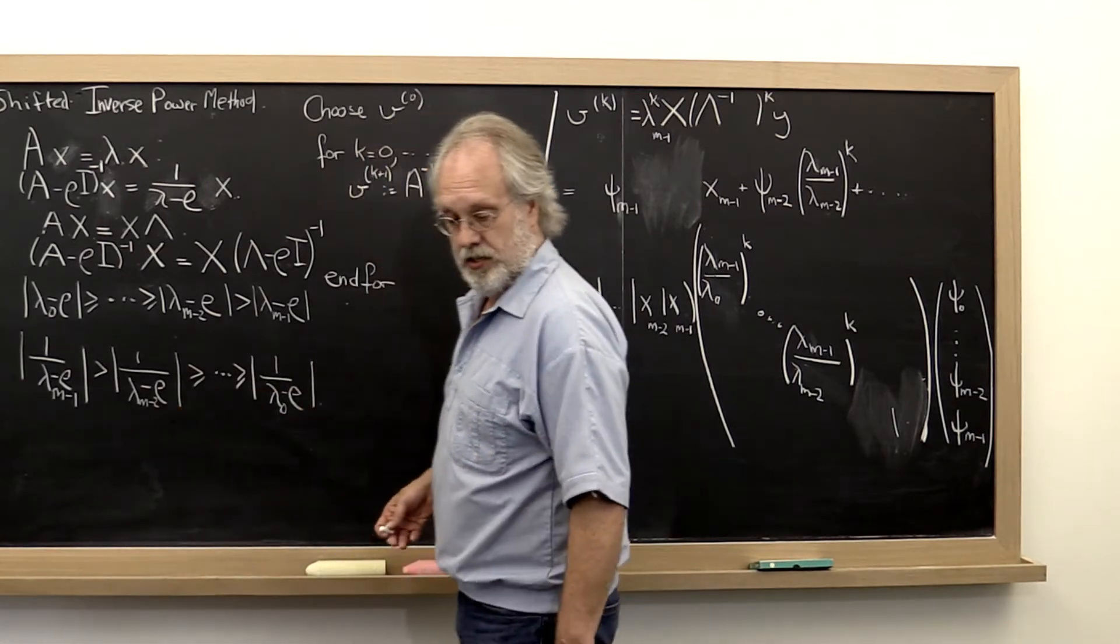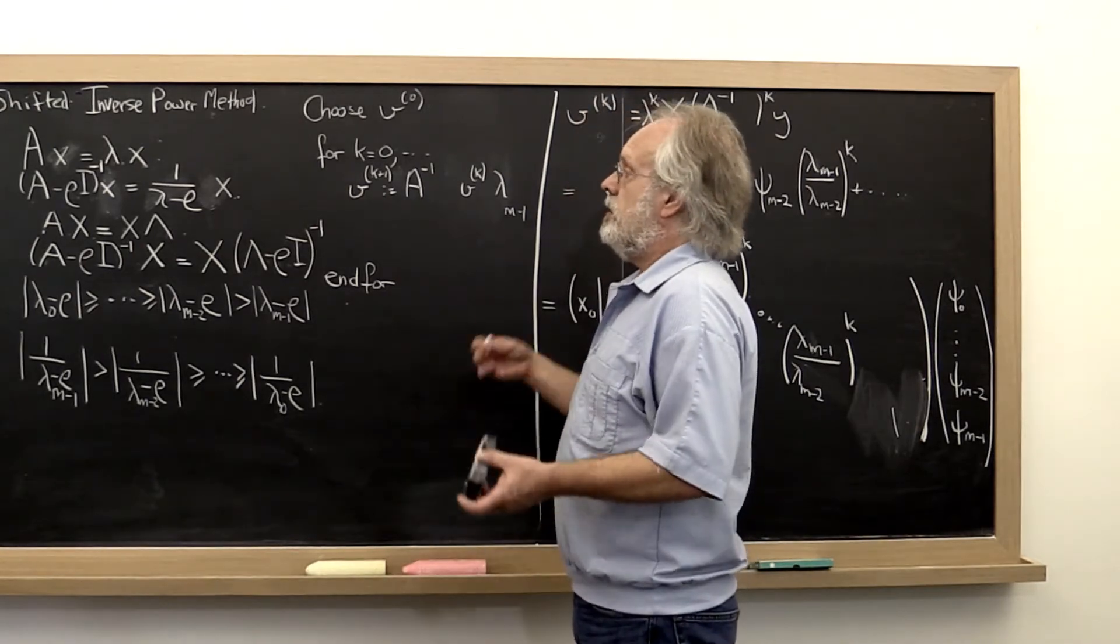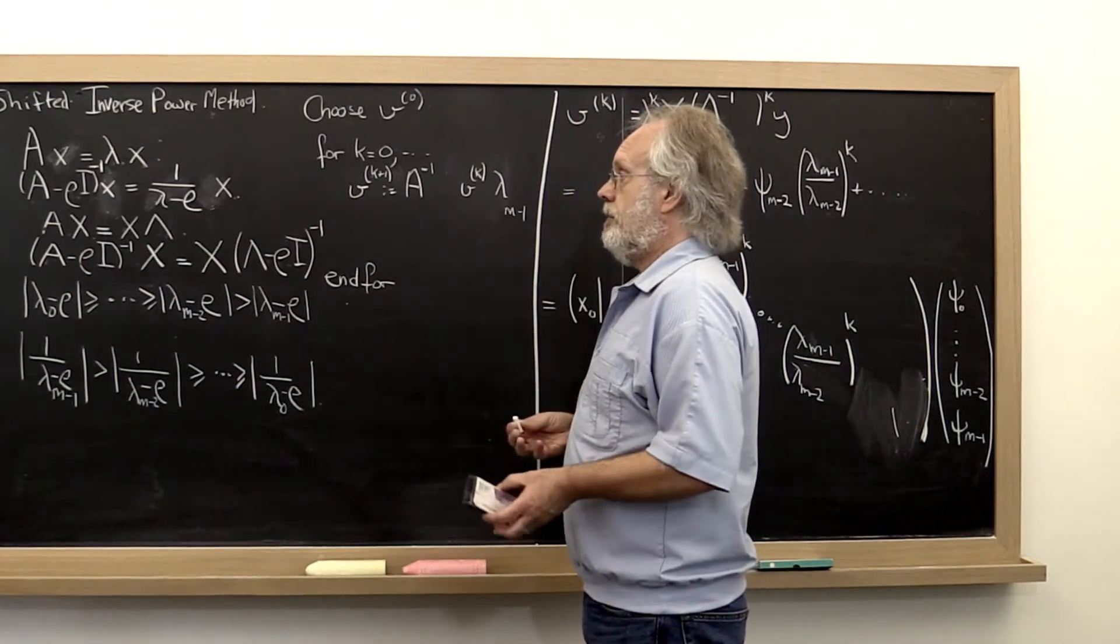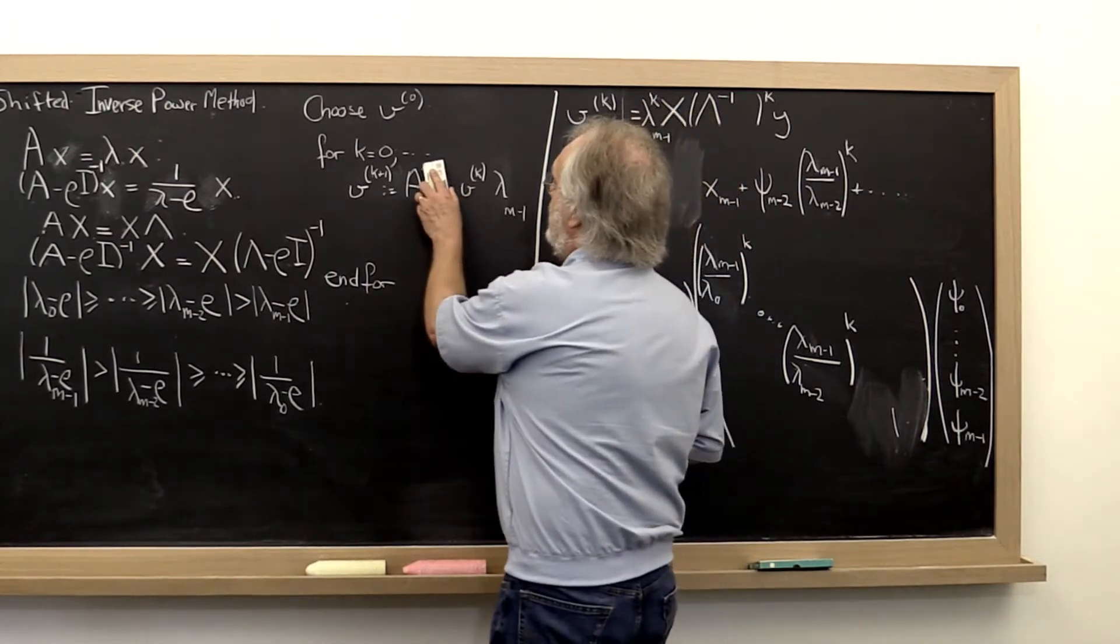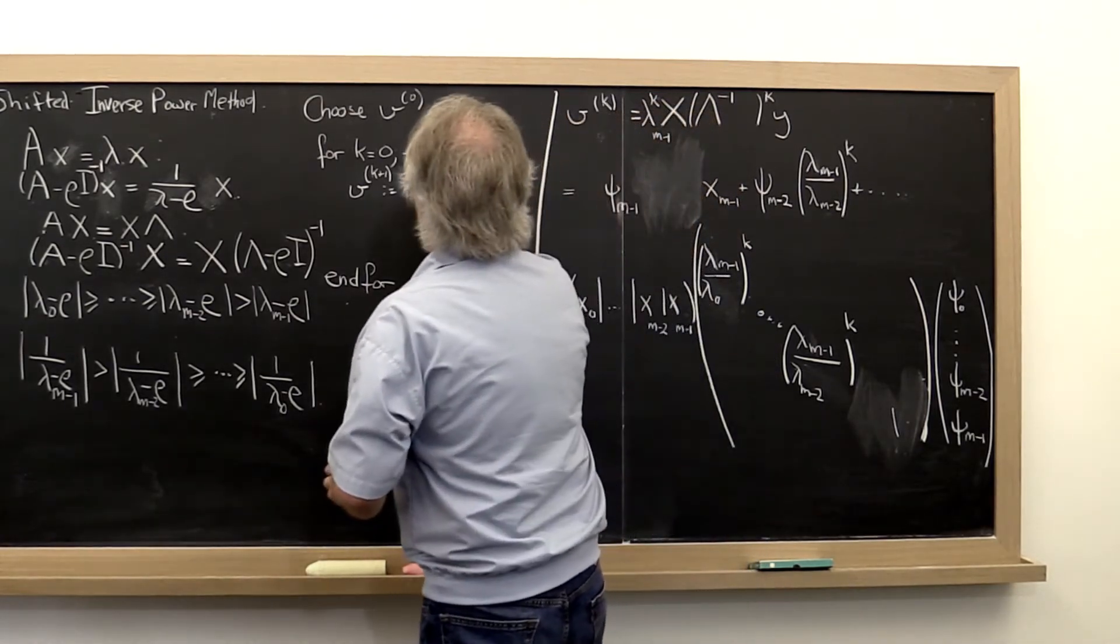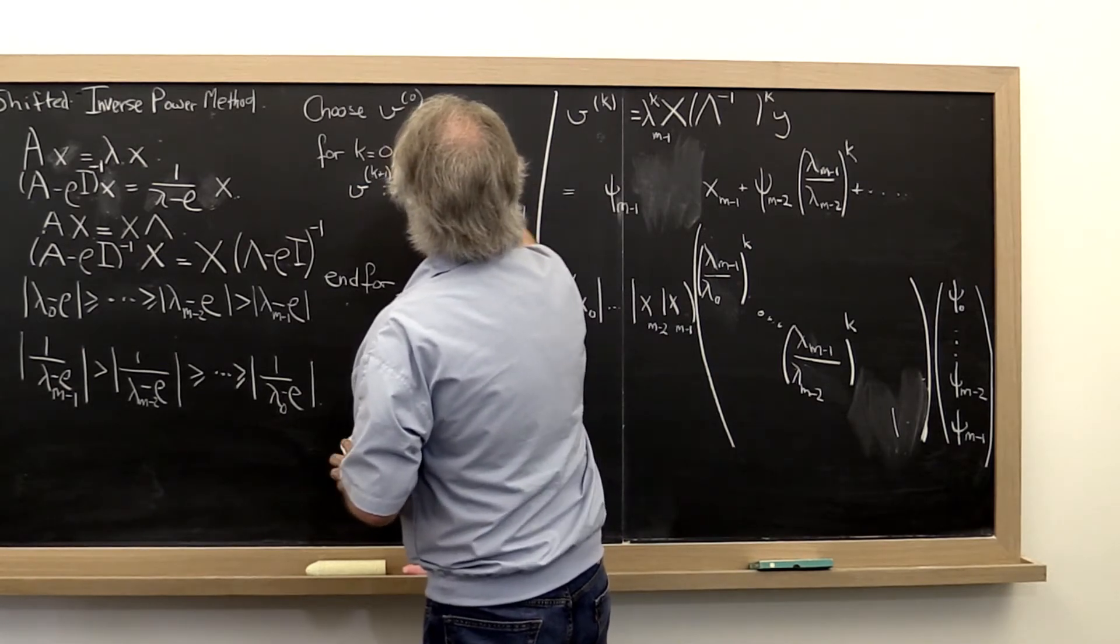So what does this suggest? This suggests that if we have a good idea of what the smallest eigenvalue is associated with a matrix, then we can instead iterate with the shifted matrix inverse.